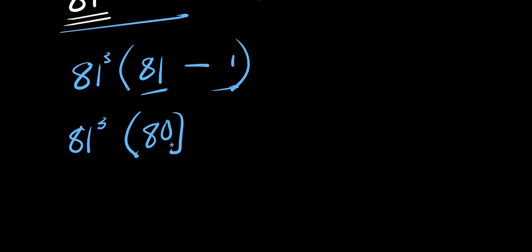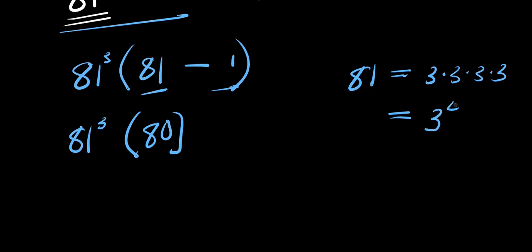81 minus 1 is 80. So at this point, remember that 81 is 3 squared, so 81 power 3 is 3 times 3 times 3 times 3, three times over — that is 3 to the power of 4, raised to the power of 3, giving 3 to the power of 12. So we have 3 power 12 times 80.